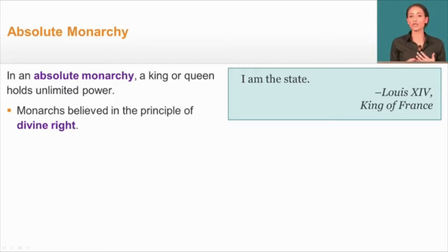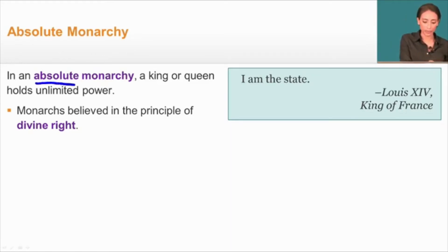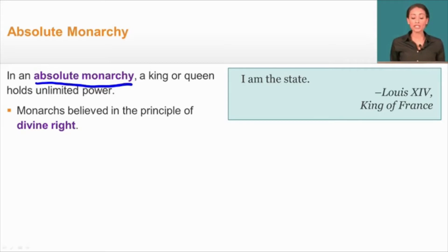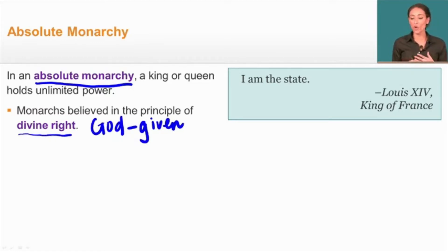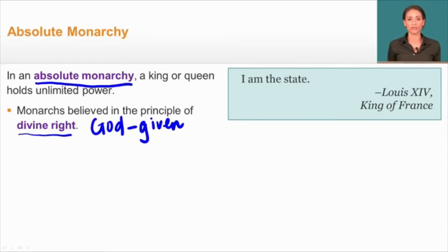Absolute rule is not new by the 15 and 1600s in Europe — it had been used hundreds of years previously by Augustus Caesar in the Roman Empire. But it really starts to make its resurgence in the 15 and 1600s. In an absolute monarchy, a king or queen holds unlimited power; they answer to no law or person. This is because they believe in the divine right — the idea that God has bestowed the right to rule upon them. We can see no better example of this ideology than in Louis XIV's quote: 'I am the state.'